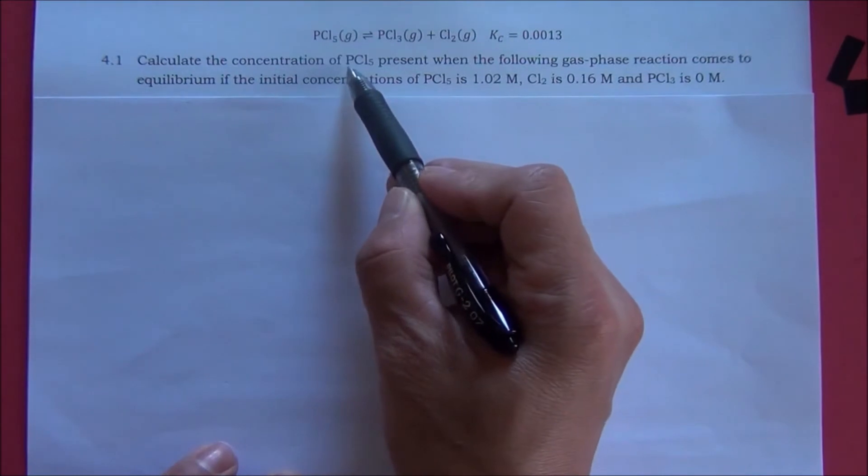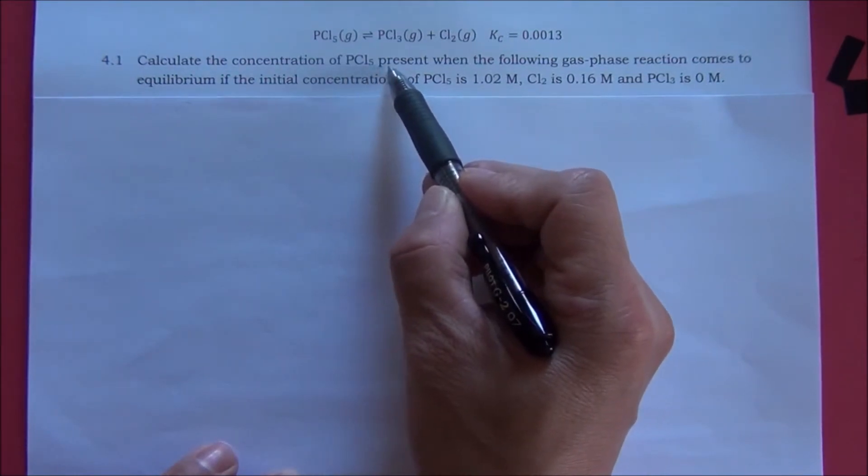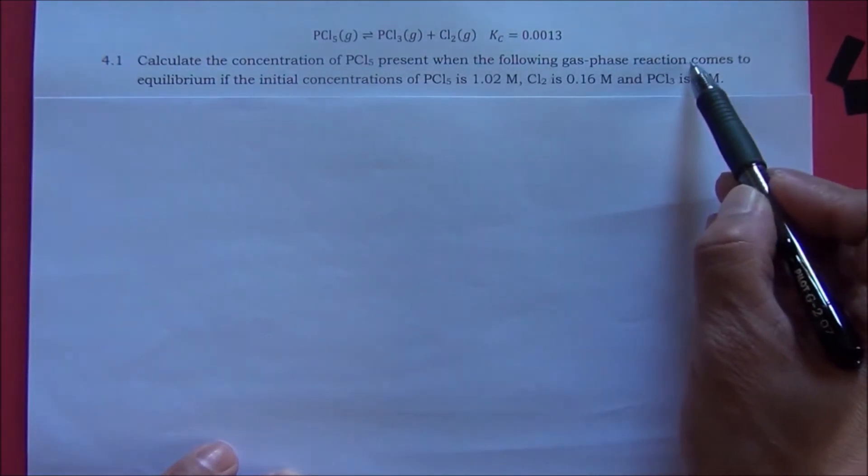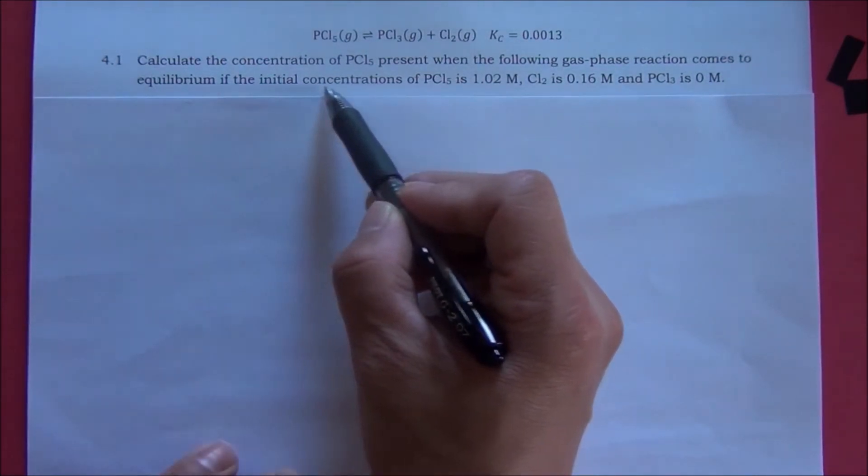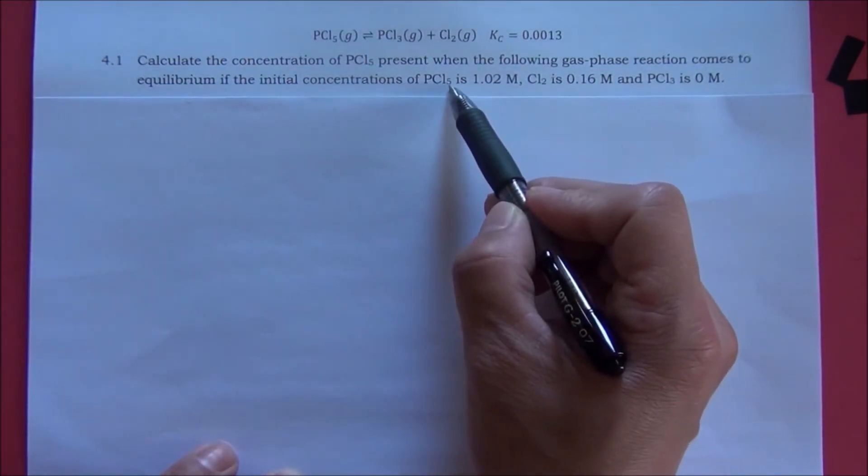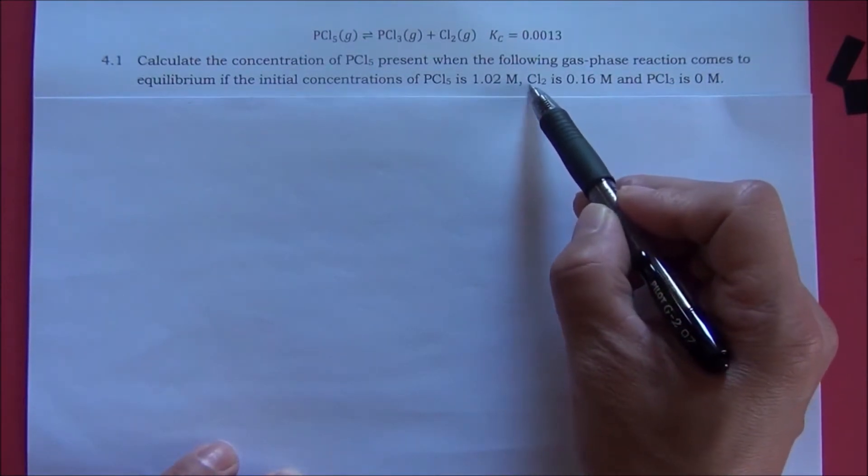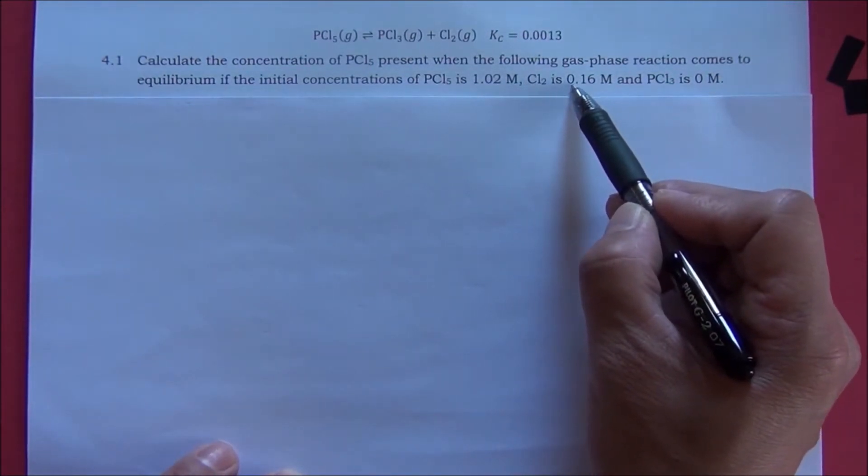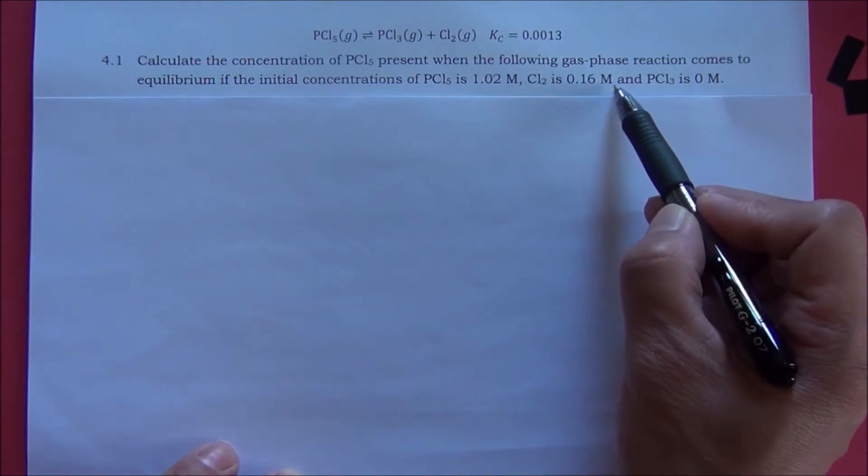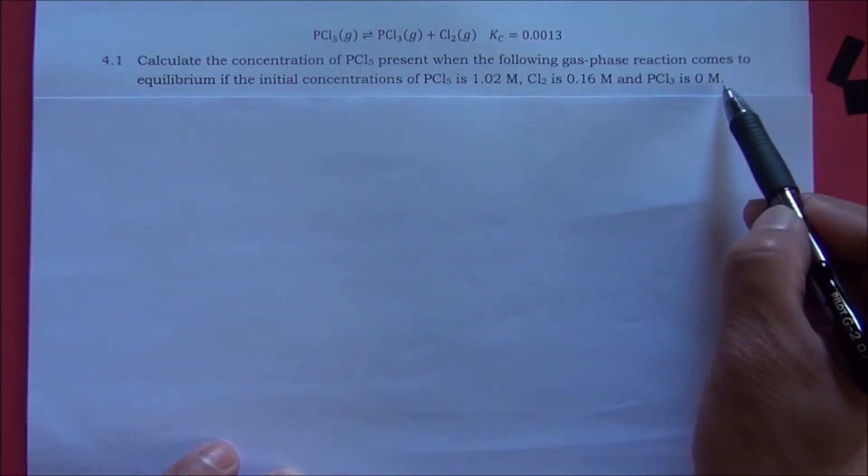Calculate the concentration of PCl5 present when the following gas phase reaction comes to equilibrium. If the initial concentration of PCl5 is 1.02 mol, Cl2 is 0.16 mol, and PCl3 is 0 mol.